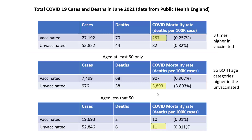People find this hard to believe and think there's some trickery going on, but the numbers do add up. It's all explained by the fact that most of the older age group are vaccinated whereas most of the younger group are not. This is an example of Simpson's Paradox, and there are other short videos on the channel about this.